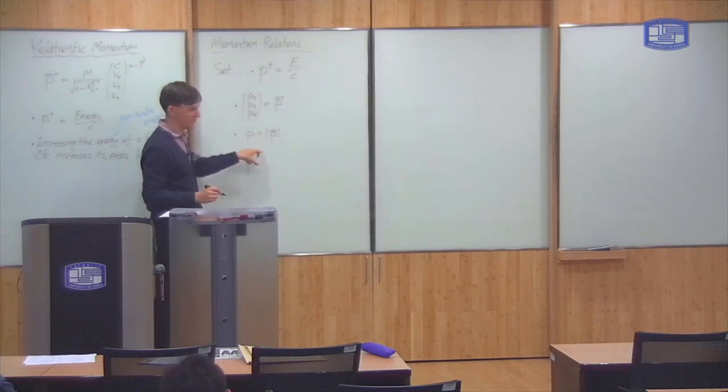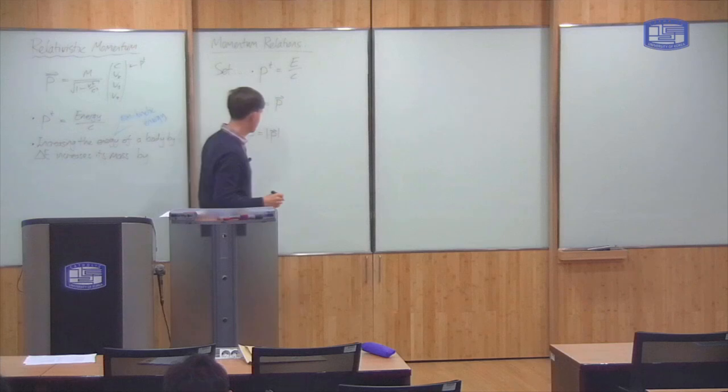There's one arrow to distinguish it from the four momentum with two arrows. And finally, I will set the number p as being equal to the length of the vector, the three vector p. So this corresponds with the Newtonian definition of momentum.